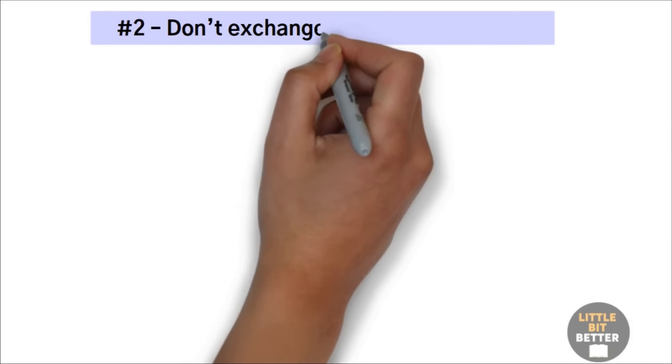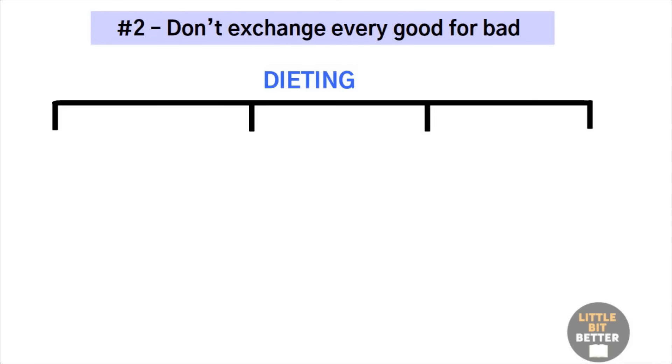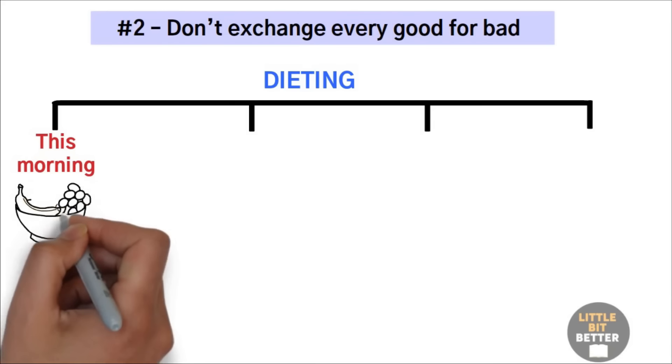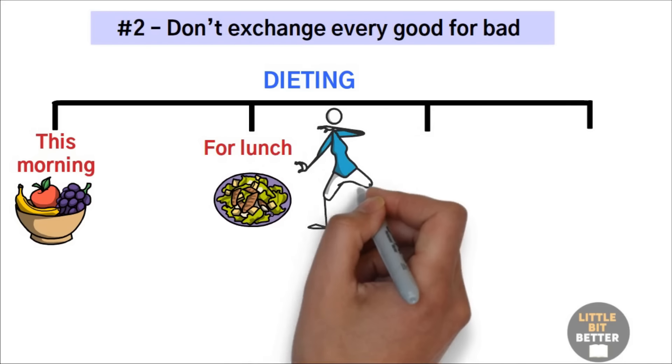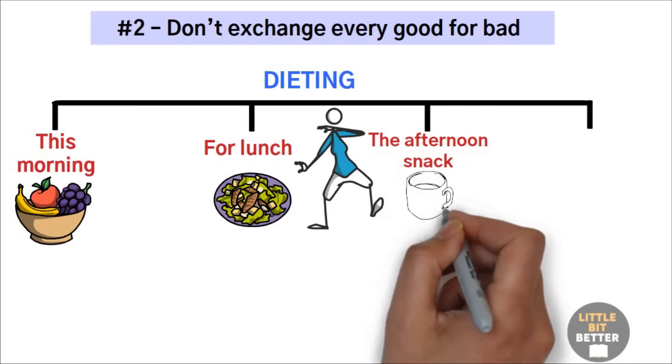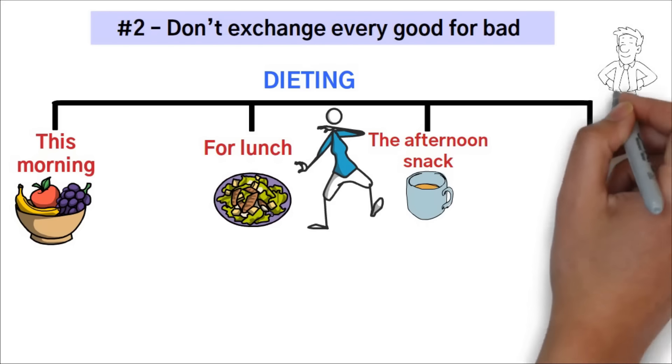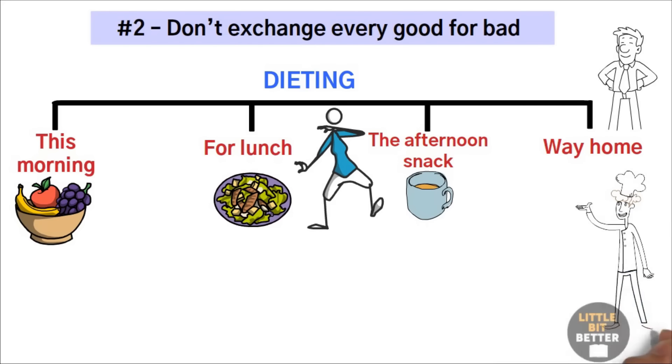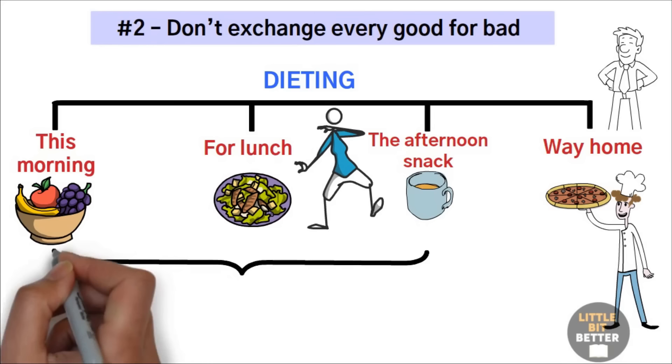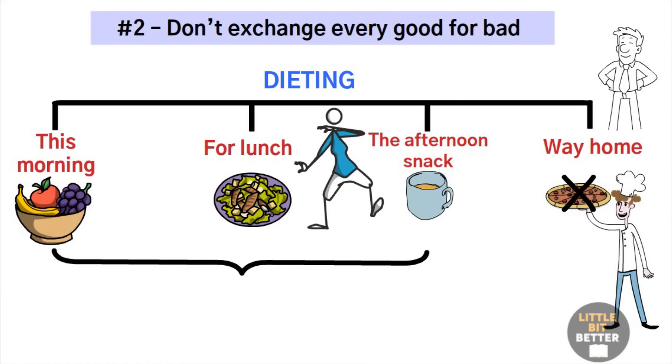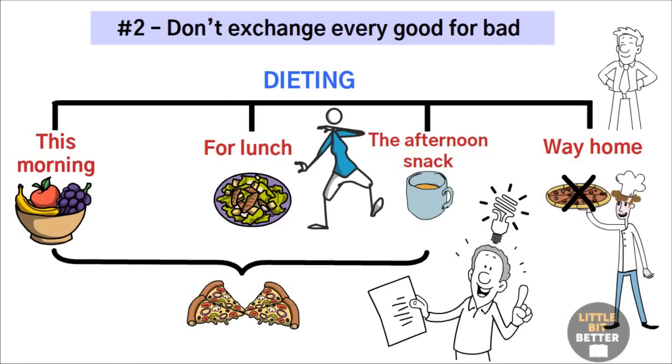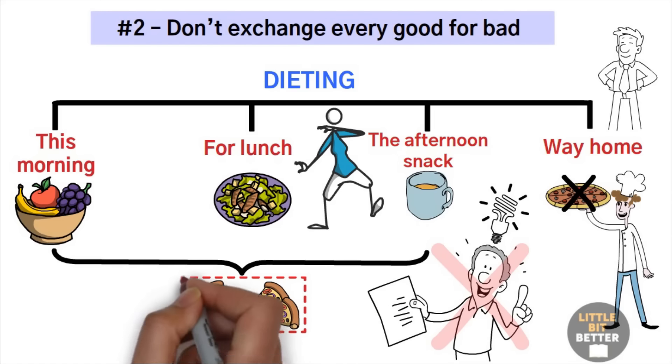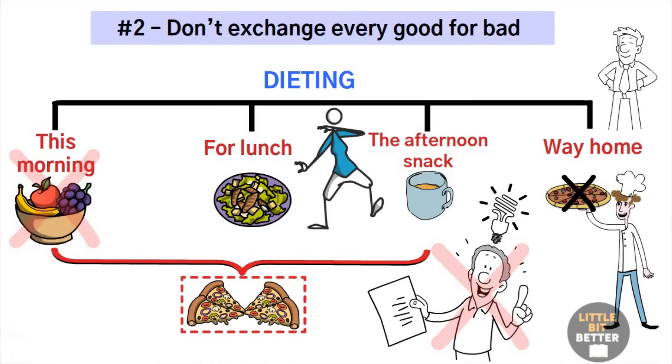Number two, don't exchange every good for bad. You've been dieting all day. This morning, you had fruit for breakfast. For lunch, your plate contained a collection of green leaves and colorful vegetables. You skipped the afternoon snack and had only a cup of green tea. You're so proud of yourself that on the way home, you think it's no big deal if you drop by a pizza place and take a margarita home. After all, you kept up the good work all day long. Besides, you won't eat the whole pizza, just a few slices. You deserve a treat, right? Wrong.